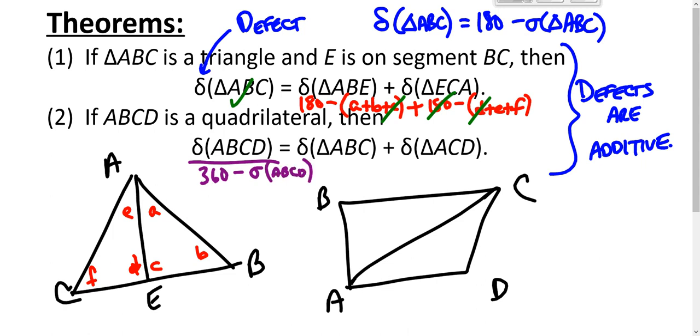And you can run a similar proof - it is not terribly difficult - and figure out that the defect of this quadrilateral is the same as the sum of the defects of these two triangles here.